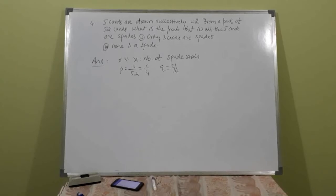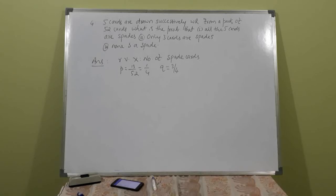Example: 5 cards are drawn successively with replacement from a pack of 52 cards. (Without replacement would lead to hypergeometric distribution.) What is the probability that: (a) all 5 cards are spades, (b) only 3 are spades, (c) none is a spade? This is binomial because each card can be categorized as spade or non-spade, and since cards are drawn with replacement, probability of spade is always 13/52 = 1/4.